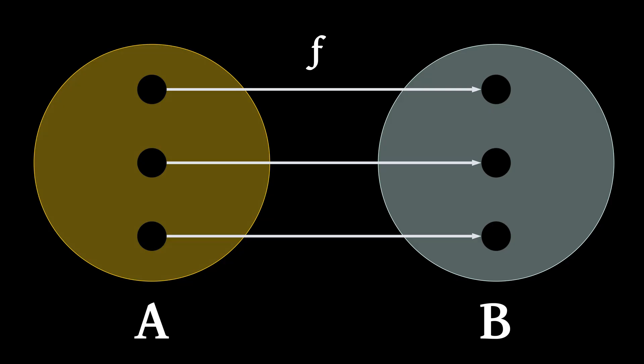Now let's revisit all three diagrams again. Was the first diagram a bijection? Yes, it was — it was both one-to-one and onto. The at-most and at-least requirements of an injection and surjection respectively are met, which means each element of A is paired with exactly one element of B and each element of B is paired with exactly one element of A — there are no unpaired elements.